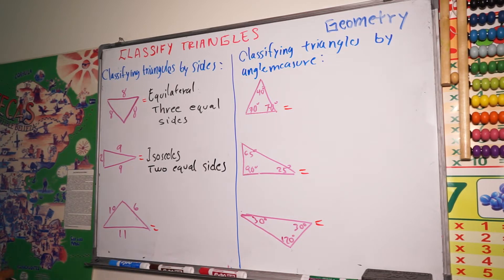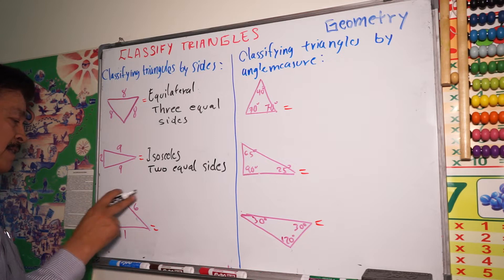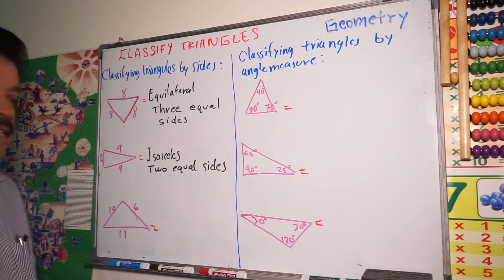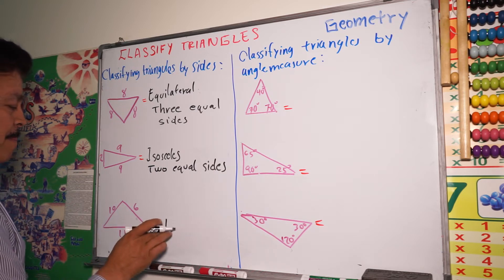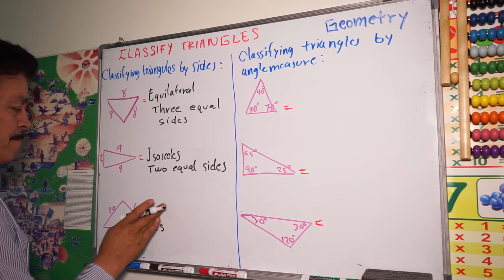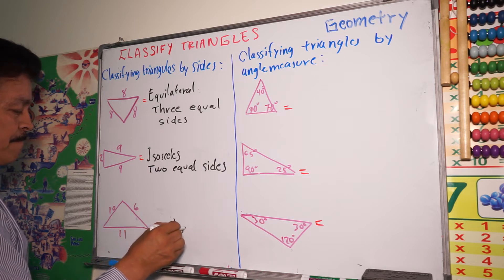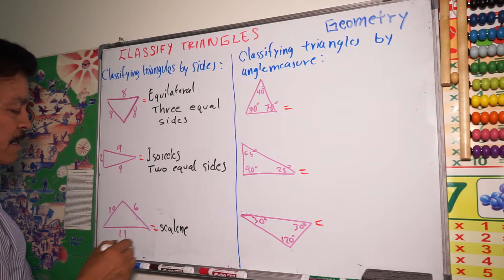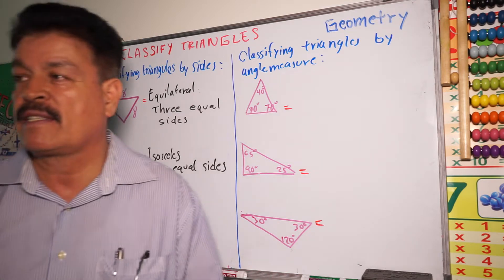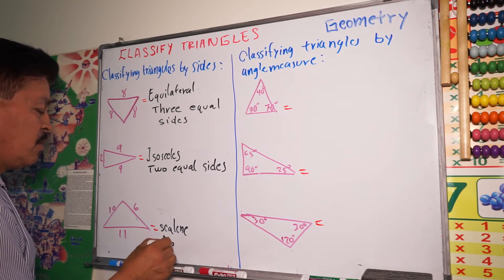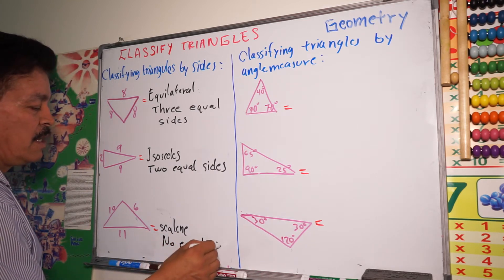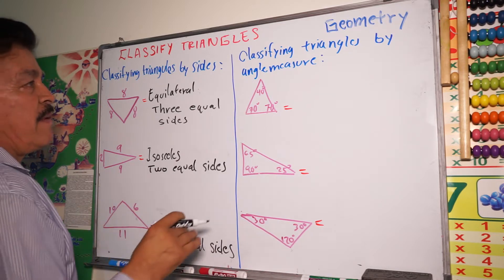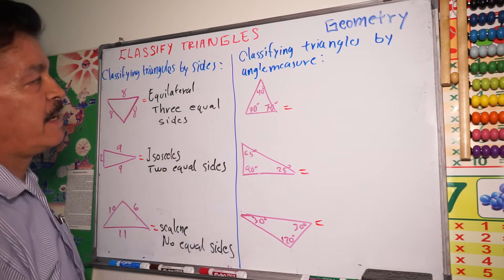In the third one, you see sides of 10, 6, and 11 — all sides are different. So this kind of triangle is called scalene. It means that it has no equal sides. All sides are different. So that covers classifying triangles by size. Now, what about when you classify triangles by angle measure?